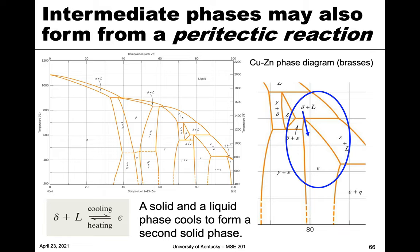Let's talk about some other reactions that can occur with these intermediate phases and whether they're congruent or incongruent. The first one is what we call a peritectic reaction. A peritectic is a specific reaction where we have one solid plus a liquid — at the higher temperature side — that goes to a completely different solid when we cool. Conversely, one solid degrades into a liquid and another solid at higher temperatures. So if you see this type of reaction, it's a peritectic.